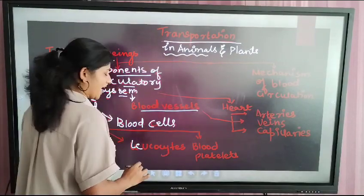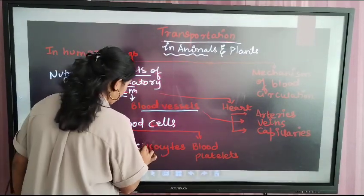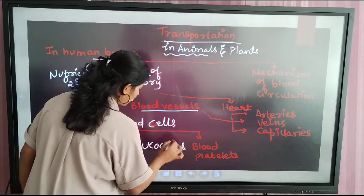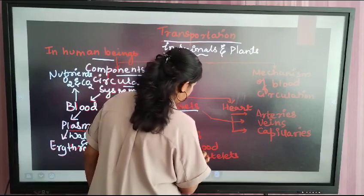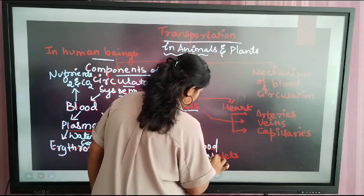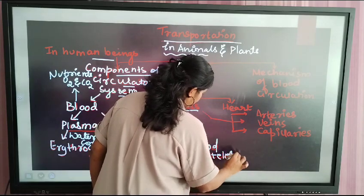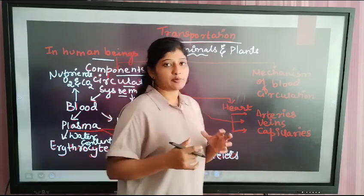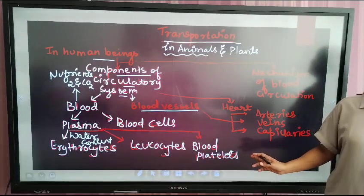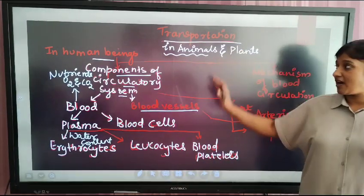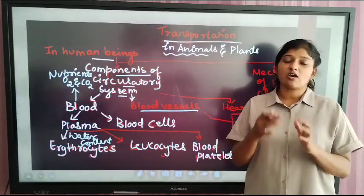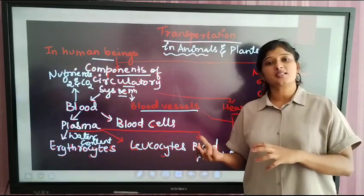Next, you have leukocytes — L-E-U — leukocytes. And then after that, you have blood platelets. So let's just revise: transportation in animals, components of blood.